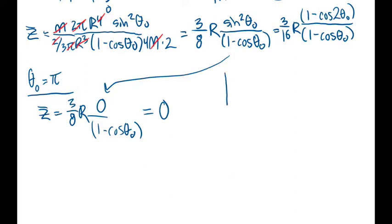Now, does that make sense? Let's draw the xz plane. If our theta angle is pi, that means our cone actually extends all the way to the negative z axis and is a sphere. What's the center of mass of a sphere centered at the origin? Zero.